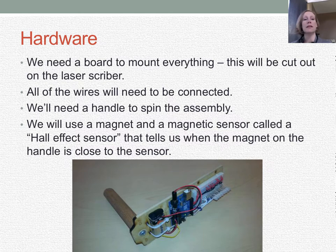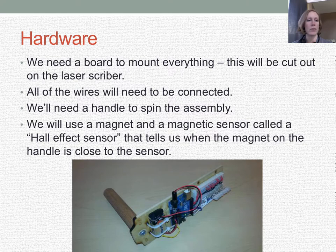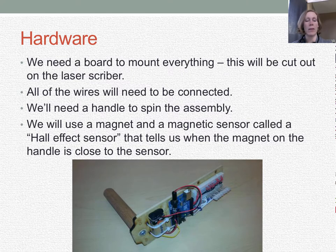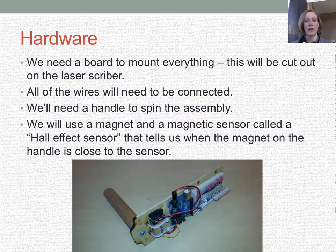For the hardware tasks, we need a board that will be cut out on a laser cutter or however your teacher determines. You'll need all wires connected — between the Arduino and the breadboard, as well as to the Hall effect sensor and the battery. We also need a handle of some kind in order to spin everything. We're going to use a magnet embedded in the handle and a magnetic sensor called a Hall effect sensor. That tells us when the magnet has passed the sensor, which tells the Arduino when to draw the picture.